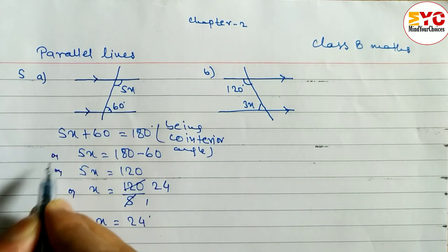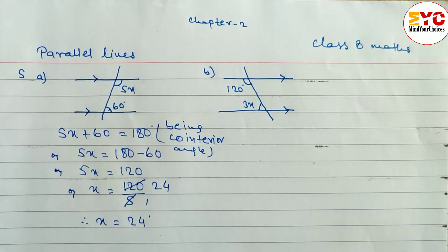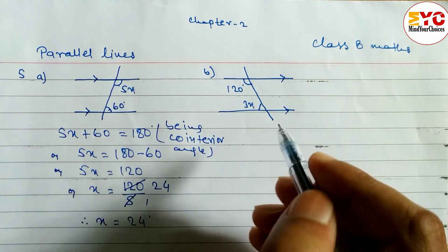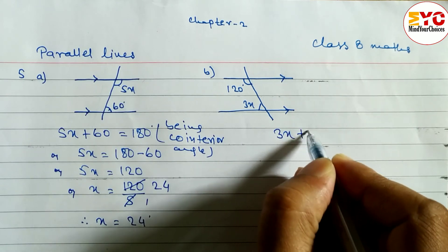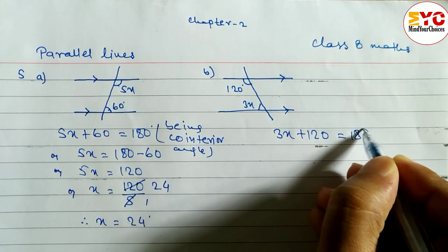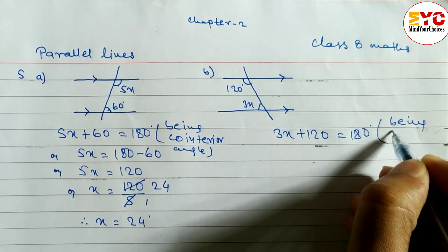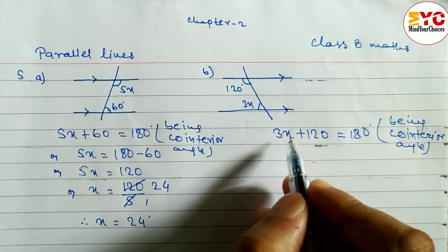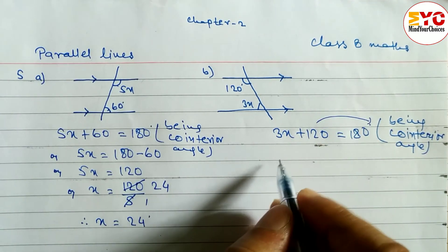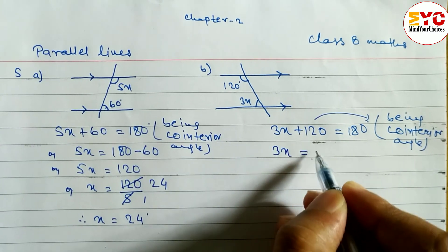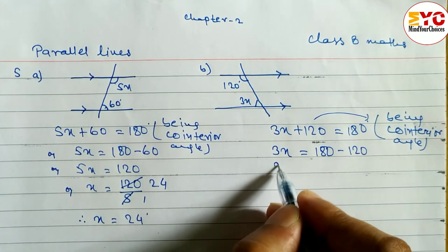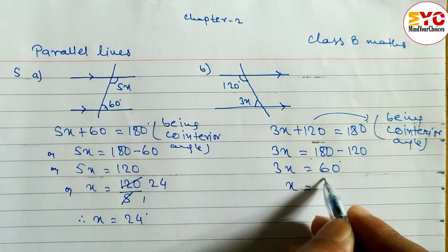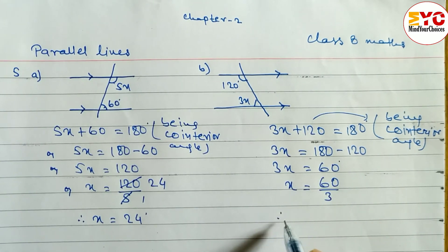Now look at question (b). Here also both angles are inside the parallel lines, so this is also co-interior. We write: 3x + 120 = 180. Reason: being co-interior angles. These two are unlike terms, so 3x = 180 − 120 = 60. Therefore x = 60 ÷ 3 = 20 degrees.